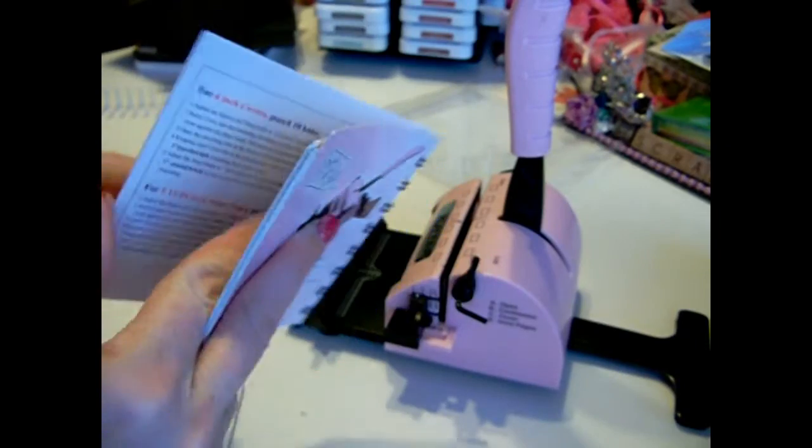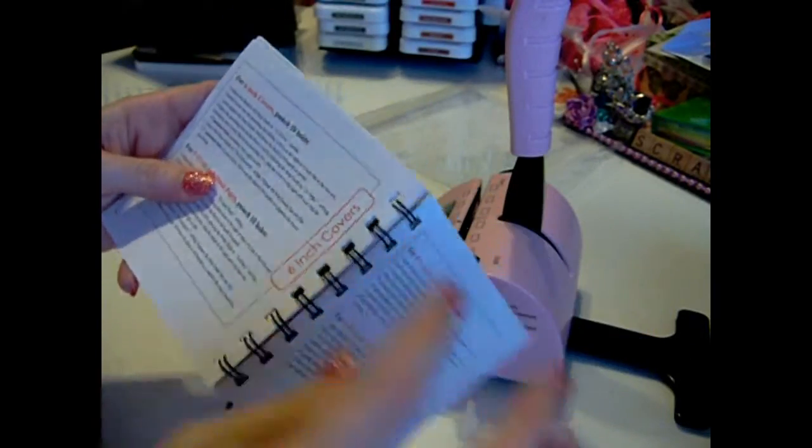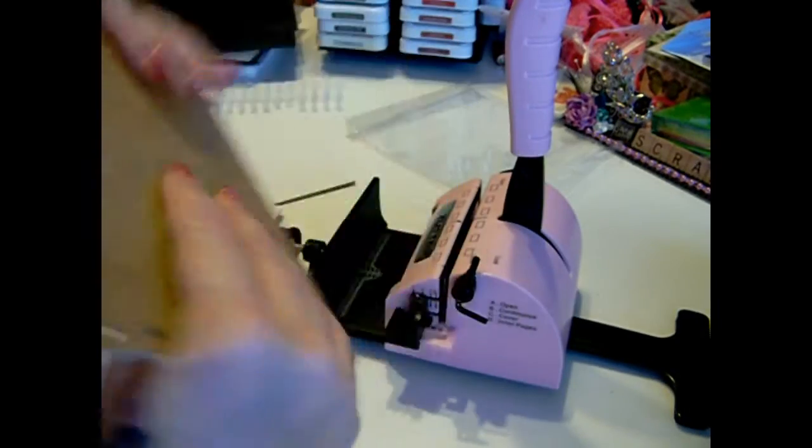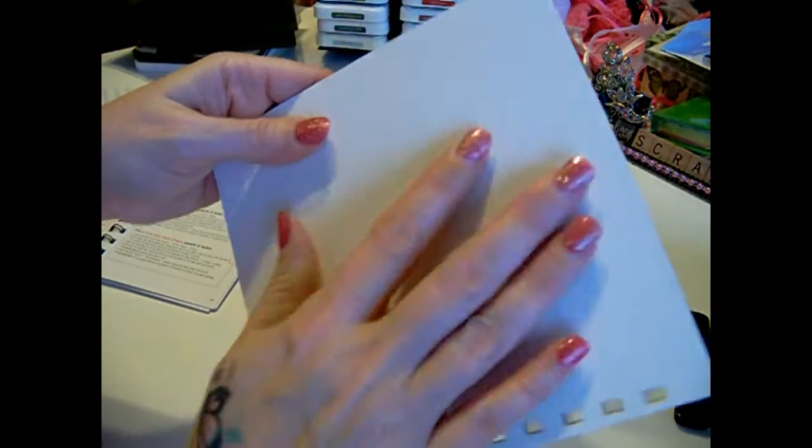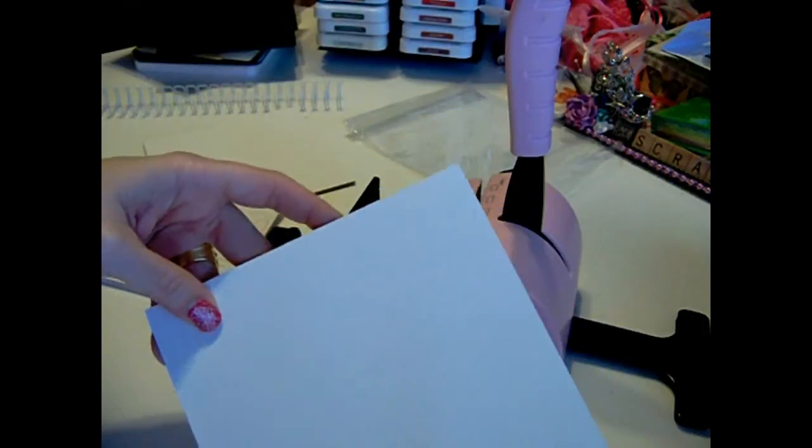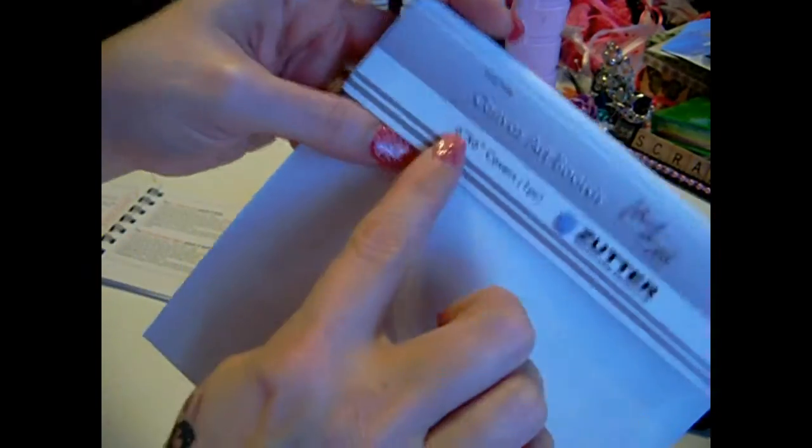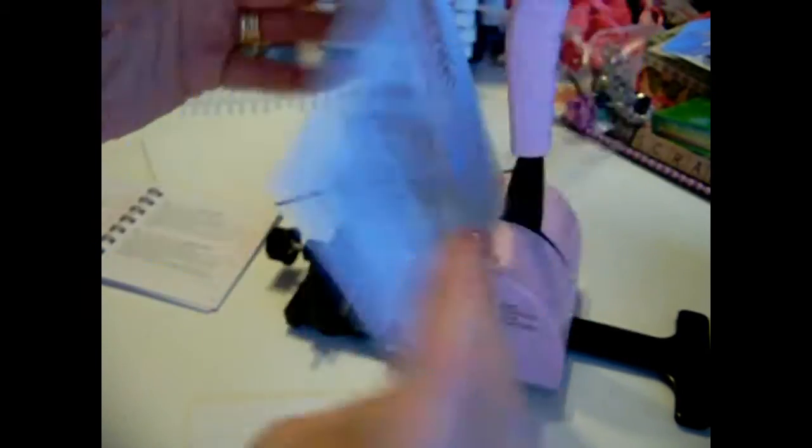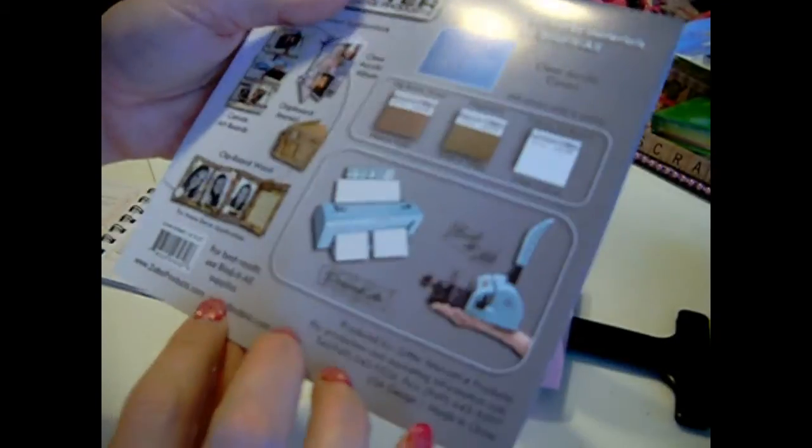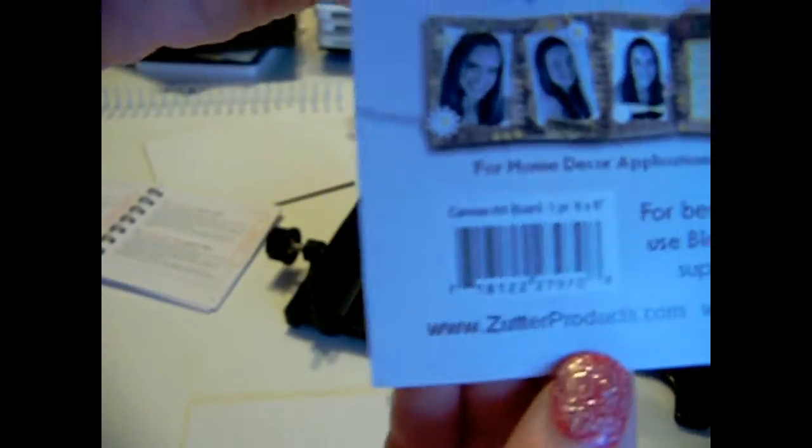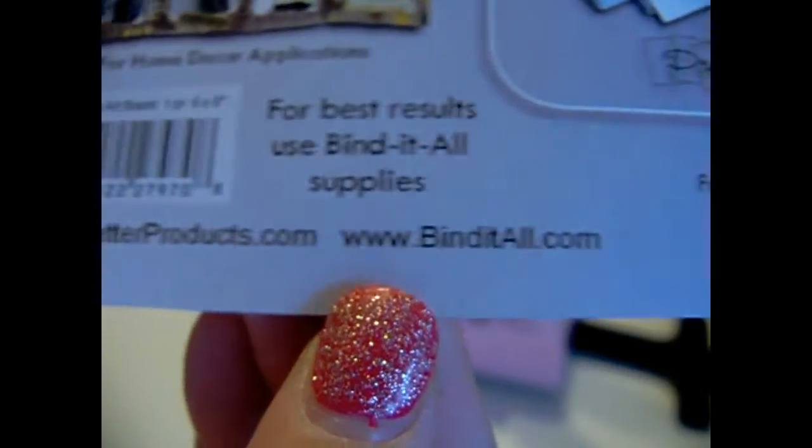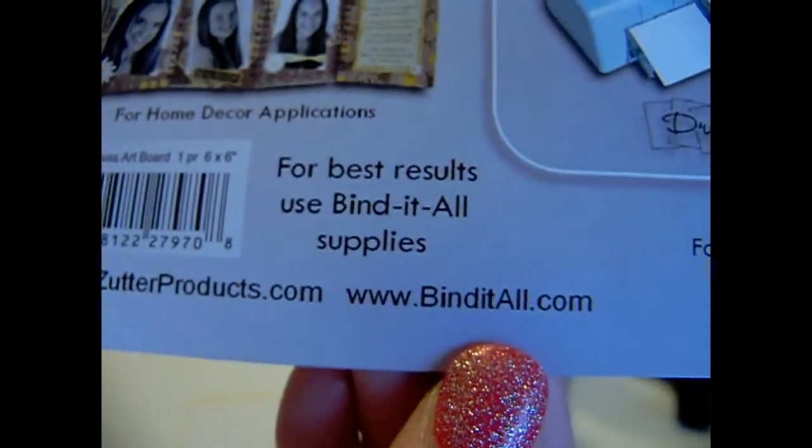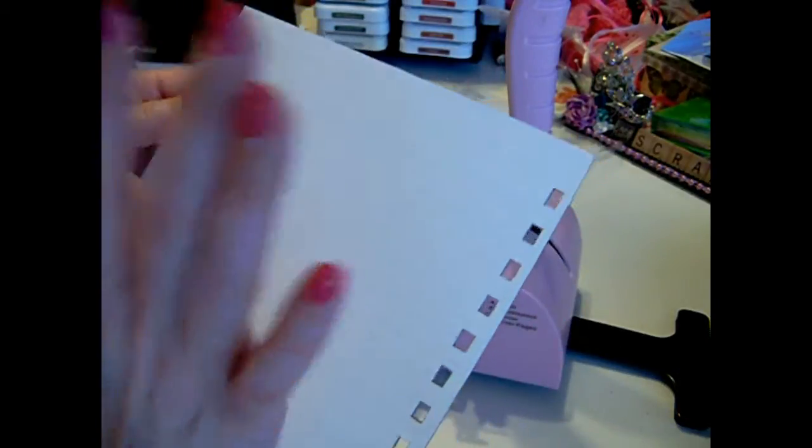But today I'm working on a six inch cover. So it's telling me that I need ten holes. This is a particle board and they're canvas covers that came from Zutter itself. Here's the packaging of it. Yeah, just canvas art boards, and they're six by six covers. And here's Zutter Products. There's their website and binditall.com.